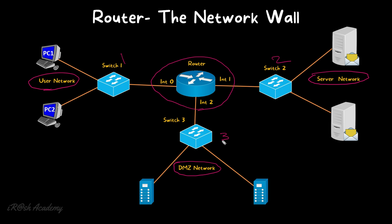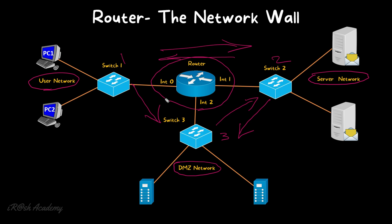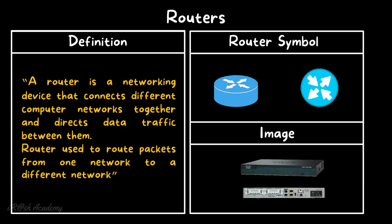The main function of this router is to separate network 1, network 2, and network 3, while establishing connectivity between them. The router routes packets from one network into a different network — from network 1 to networks 2 and 3, from network 2 to networks 1 and 3, and from network 3 to networks 1 and 2. A router is a networking device that connects different computer networks and directs data traffic between them.